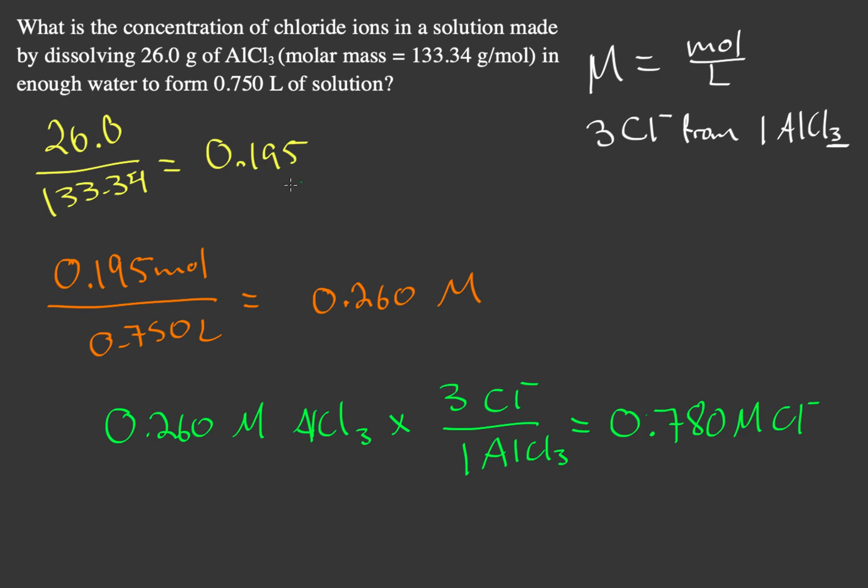That's the step-by-step process: getting the moles, finding the molarity of aluminum chloride, and then doing dimensional analysis to convert to chlorine ions.